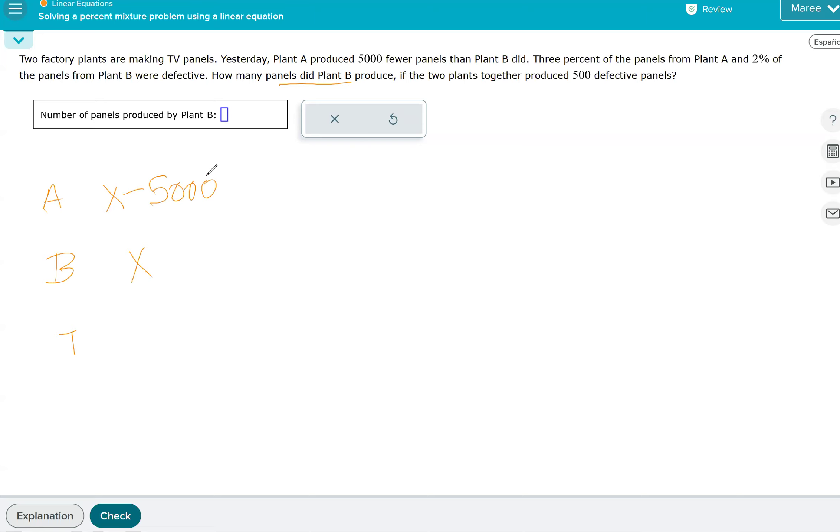The percentage, so these are the panels that they produced. The percent that were defective and then the actual count of the defective panels. So the percent of A was 3%, the percent of plant B was 2%, and the two plants together produced 500 defective panels. So 500 is going to go right here.